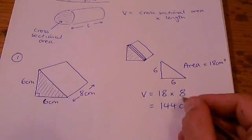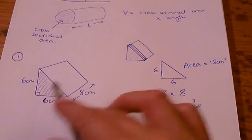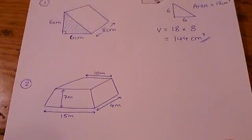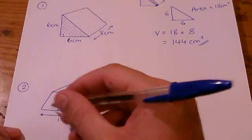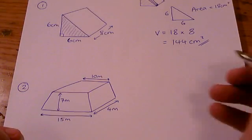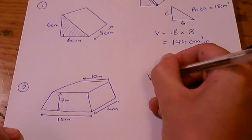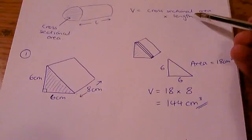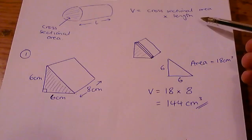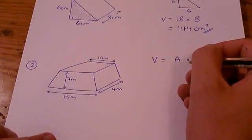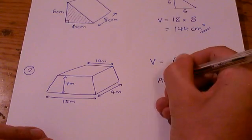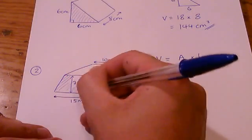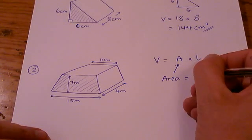On this next example you can see we have a trapezium as the cross-section of our prism. We are going to need to use the formula: cross-sectional area multiplied by length. But we are going to need to work out the area first.